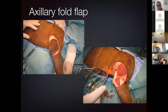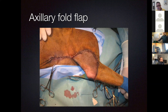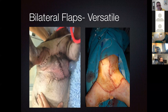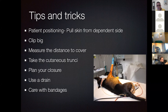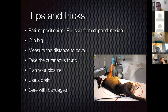An axillary fold flap follows the same principles for forelimb defects near the elbow. Bilateral flank fold flaps can cover huge ventral abdominal defects. Tips and tricks for reconstruction: clip widely, measure the distance to cover, ensure you take the cutaneous trunci, plan your closure, use drains only if necessary for larger defects, and be careful with bandages to avoid a tourniquet effect. Often no bandage is needed. If a drain is used, do not place it through the base of the flap as it could damage the blood vessel; use aseptic technique; remove the drain at three to five days. Closed suction causes the flap to adhere to the underlying bed and form a fibrin seal.